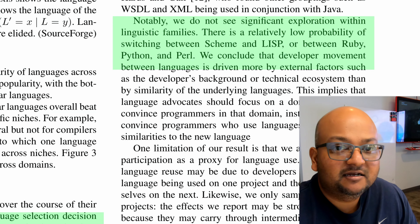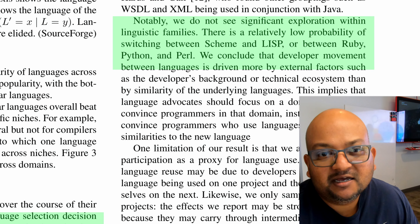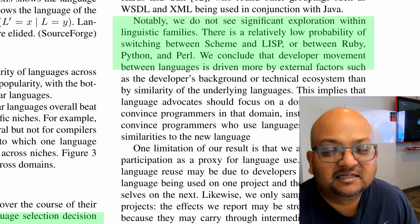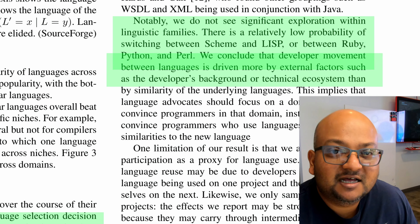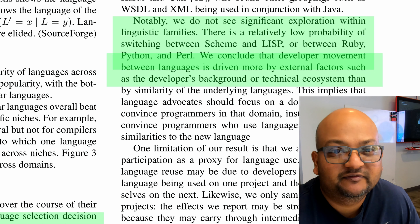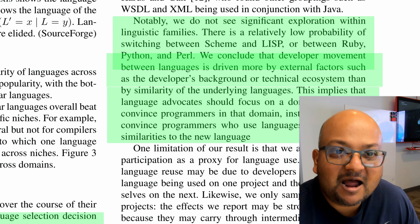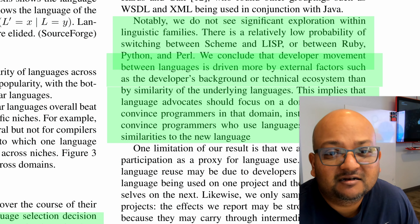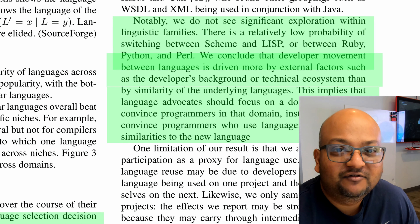Another interesting thing to note is that programmers tend to stay within one language family — they'll pick one of the scripting languages from Perl, Python, or Ruby, or one of the Lisp languages from Scheme and Lisp and so on. What this implies is that when developers move to a new language, they do it more for factors that are external to the language itself, like the ecosystem. What this means for language designers is that if they want to win over new programmers, they should focus on one domain and serve it really well — as Python does today, totally dominating data science and machine learning because it has excellent libraries for those domains.